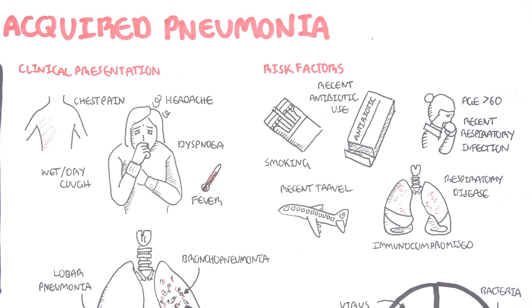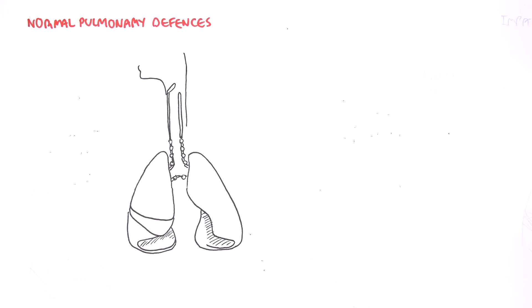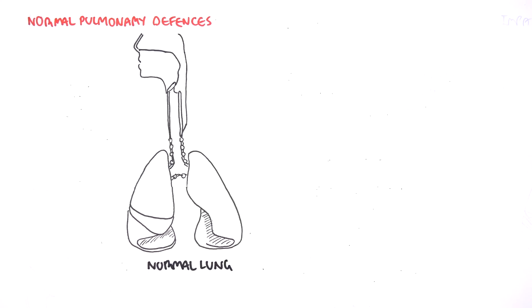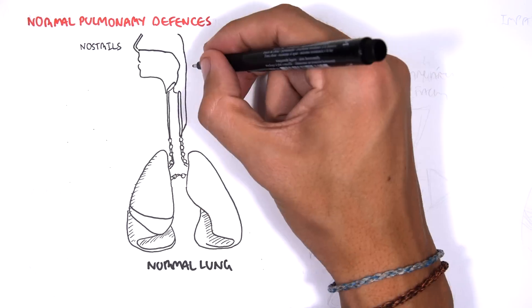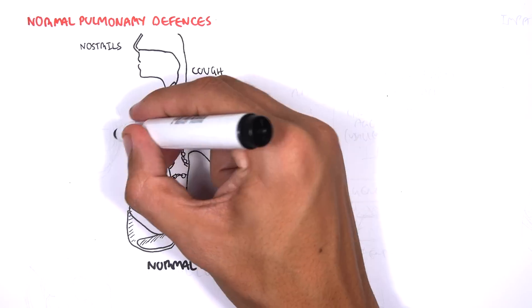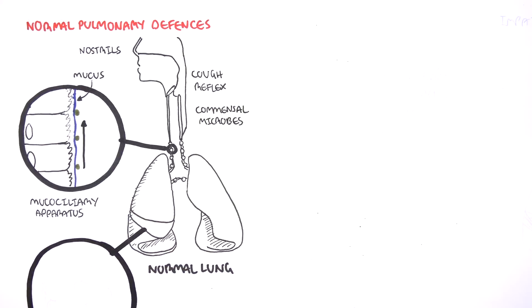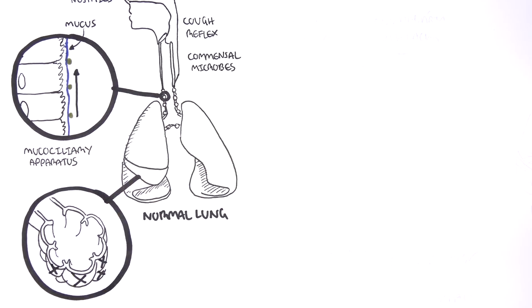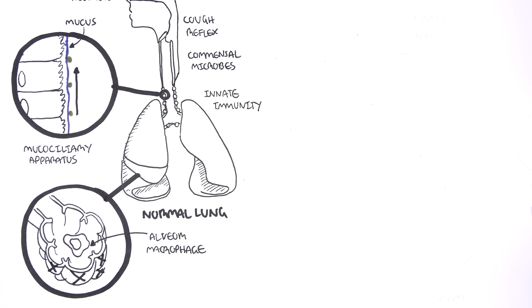How do these microbes actually cause the infection? Let's look at what barriers we have in our respiratory system. Normal pulmonary defenses include the nostrils, the cough reflex, commensal microorganisms, the mucociliary apparatus that sweeps bad things out of the respiratory tract, and alveolar macrophages deep in the lung tissue. We also have our innate immune system, including antibodies, dendritic cells, and mast cells, all of which are important in defending our respiratory tract.